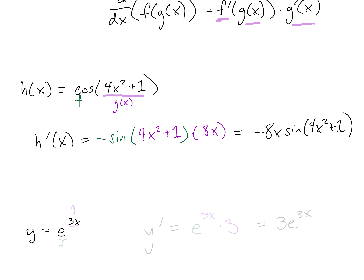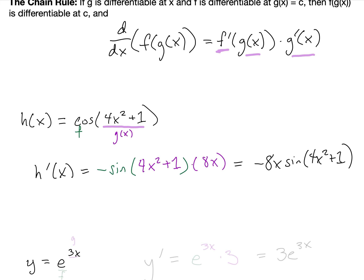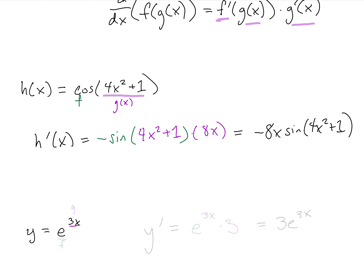For y equals e to the 3x, the 3x is our inside function and e to the something is our outside function — our f. Our function g is 3x. So our derivative y prime equals the derivative of the outside function. The derivative of e to the something is just e to the something, so we leave the inside function alone and then multiply by the derivative of the inside. The derivative of 3x is simply 3, and this simplifies to just 3e to the 3x.